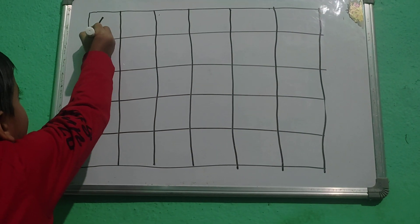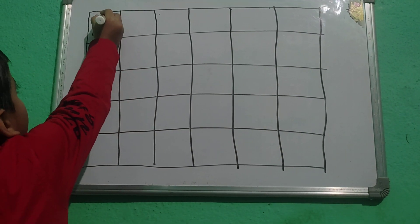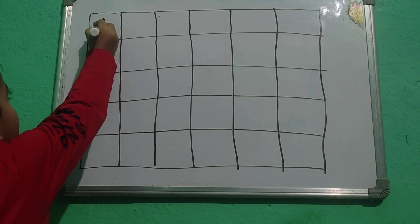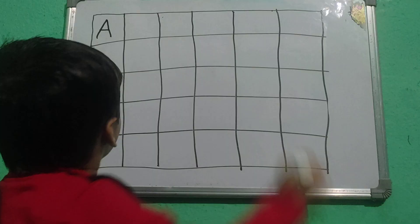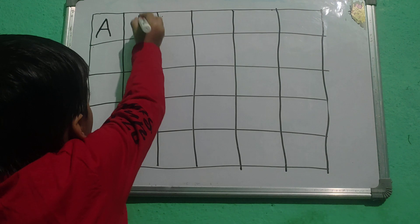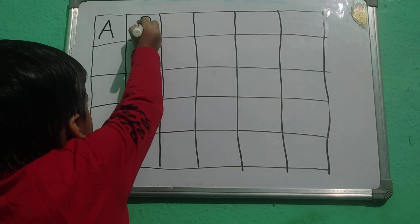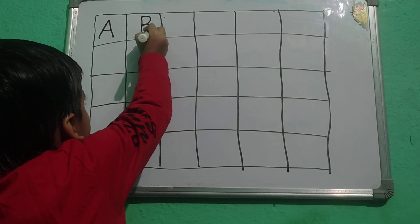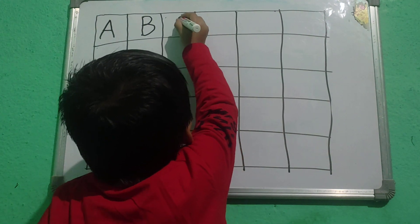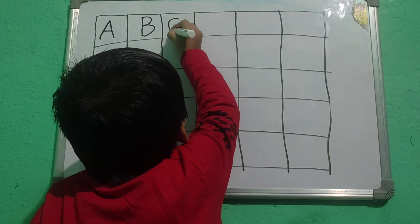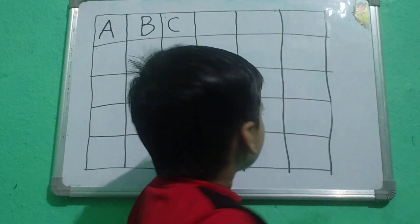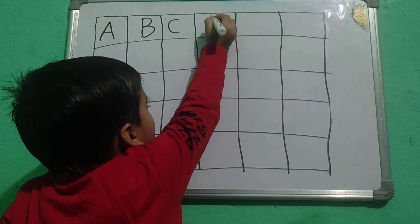A for Apple. B for Ball. C for Cat. D for Dog.